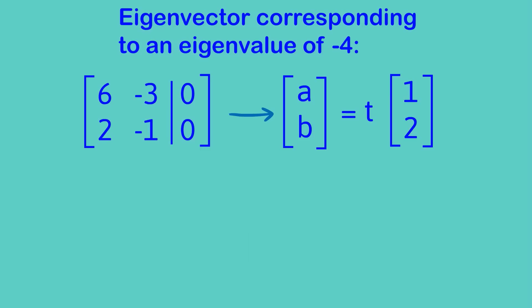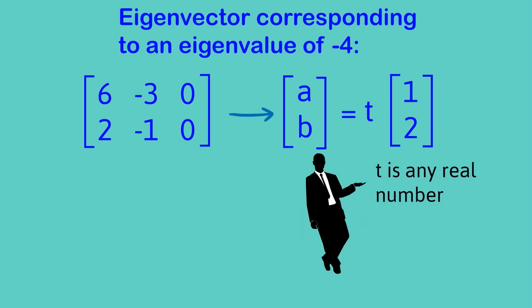If you go through all the Gaussian elimination, I'll leave that for you to do, then we end up with that the vector [a,b] is equal to some multiple or any multiple of the vector [1,2] which I've got there.